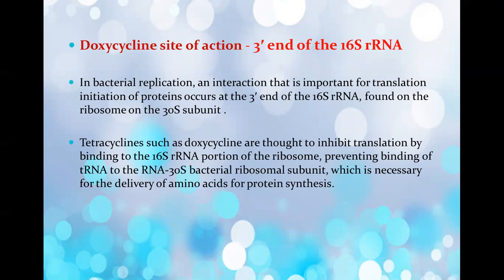The next question was about the doxycycline site of action, which is the 3-N of the 16S rRNA. In bacterial replication, an interaction important for translation initiation of protein occurs at 3-N of 16S rRNA, found on the 30S ribosomal subunit. Tetracyclines such as doxycycline inhibit translation by binding to the 16S rRNA and preventing tRNA binding to the RNA-30S bacterial ribosome subunit, which is necessary for delivery of amino acids for protein synthesis.